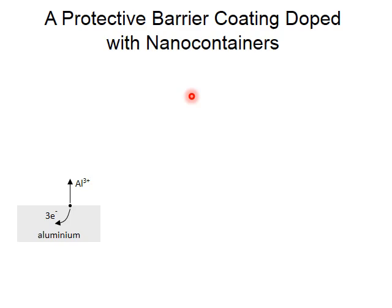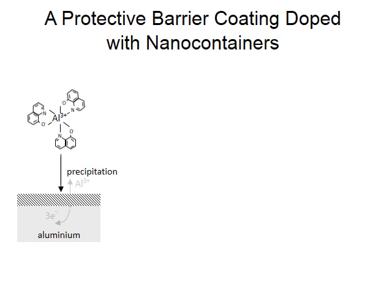Let me tell you about a specific example I have been working on. The metal I used is aluminum. The pitting corrosion of aluminum leads to the formation of aluminum ions. These ions can form a molecular chelate complex with our corrosion inhibitor hydroxyquinoline. The complex is not water soluble and precipitates on the surface of the aluminum, forming a protective layer that is impermeable to corrosive species and can eventually stop corrosion.